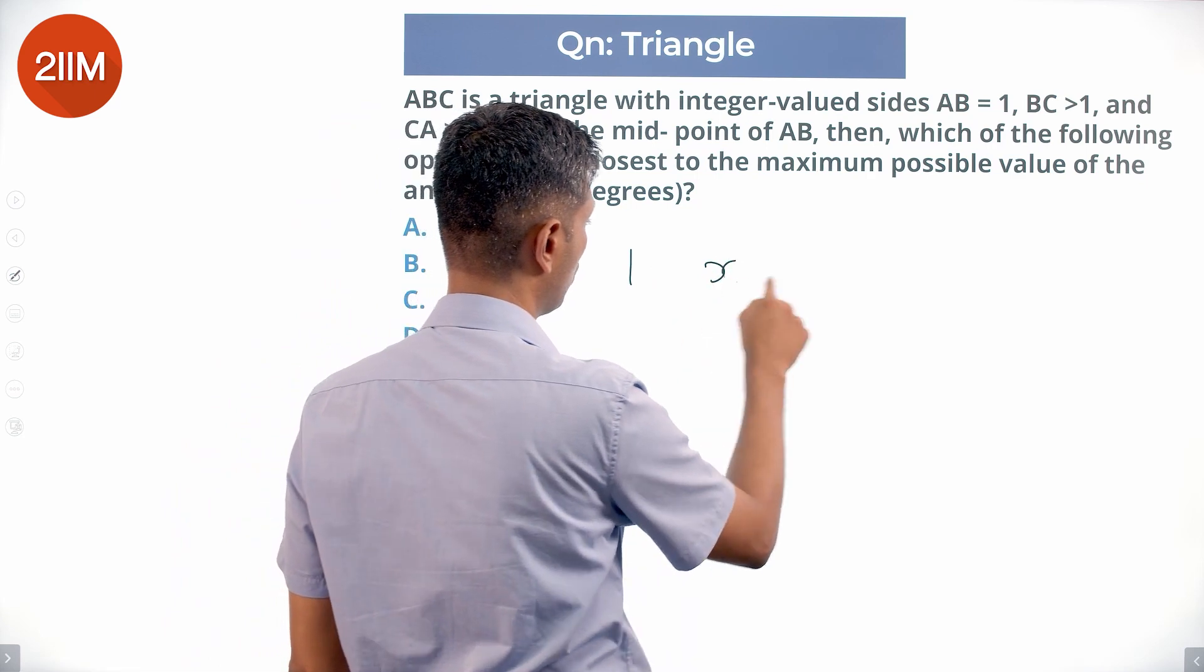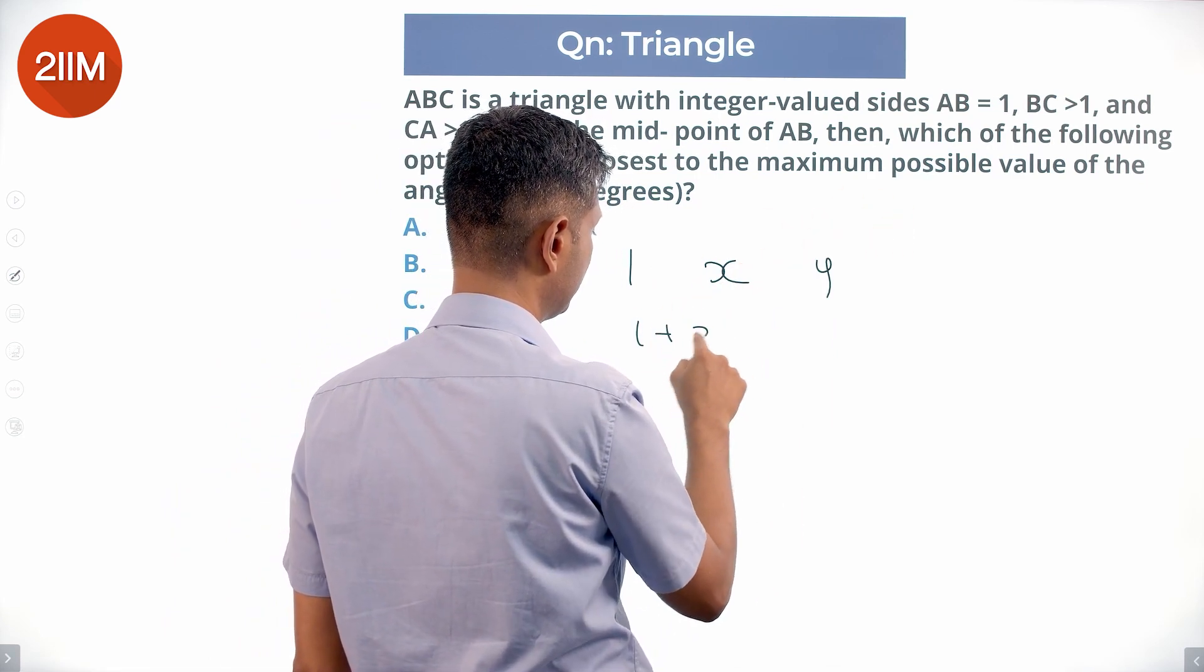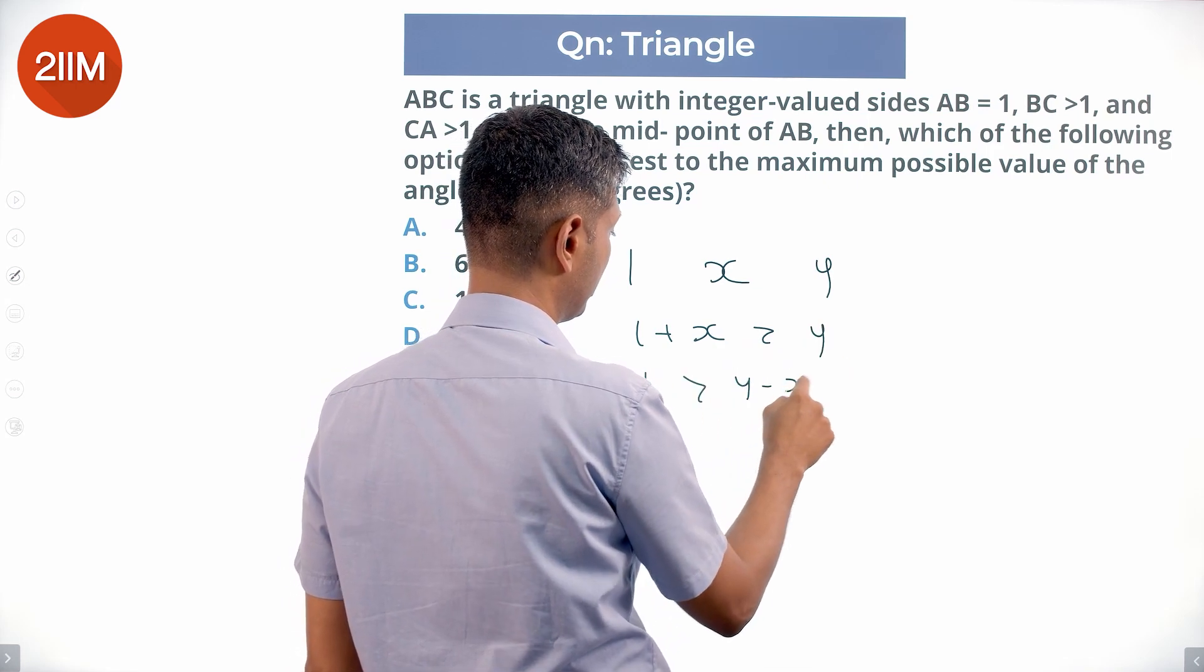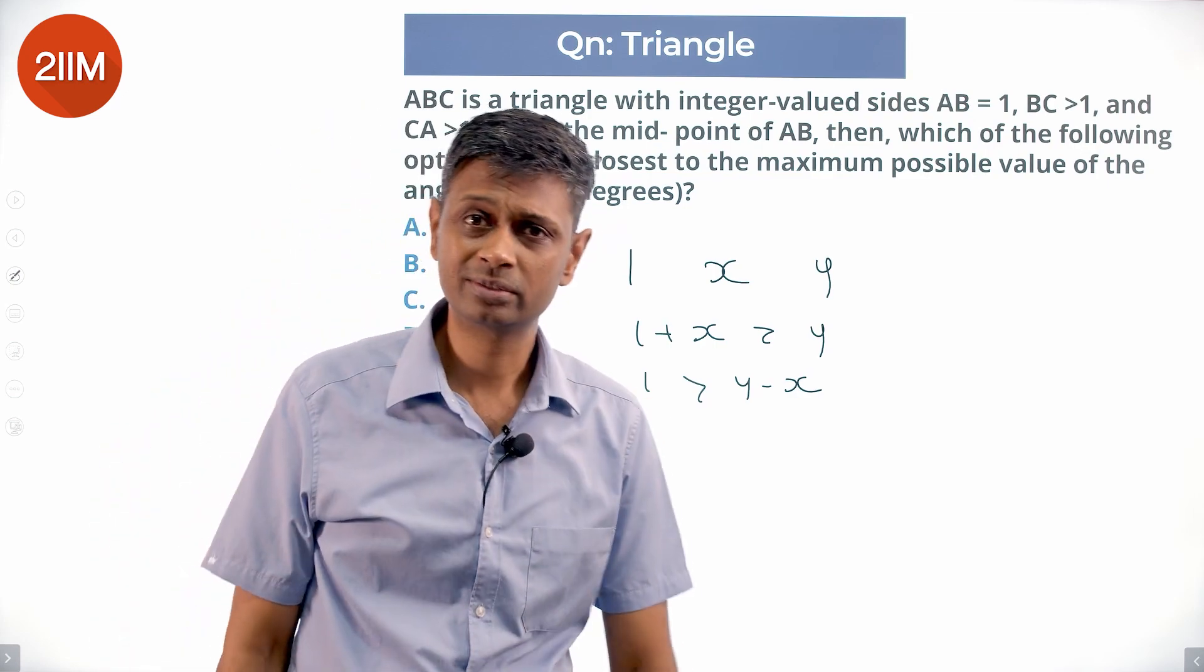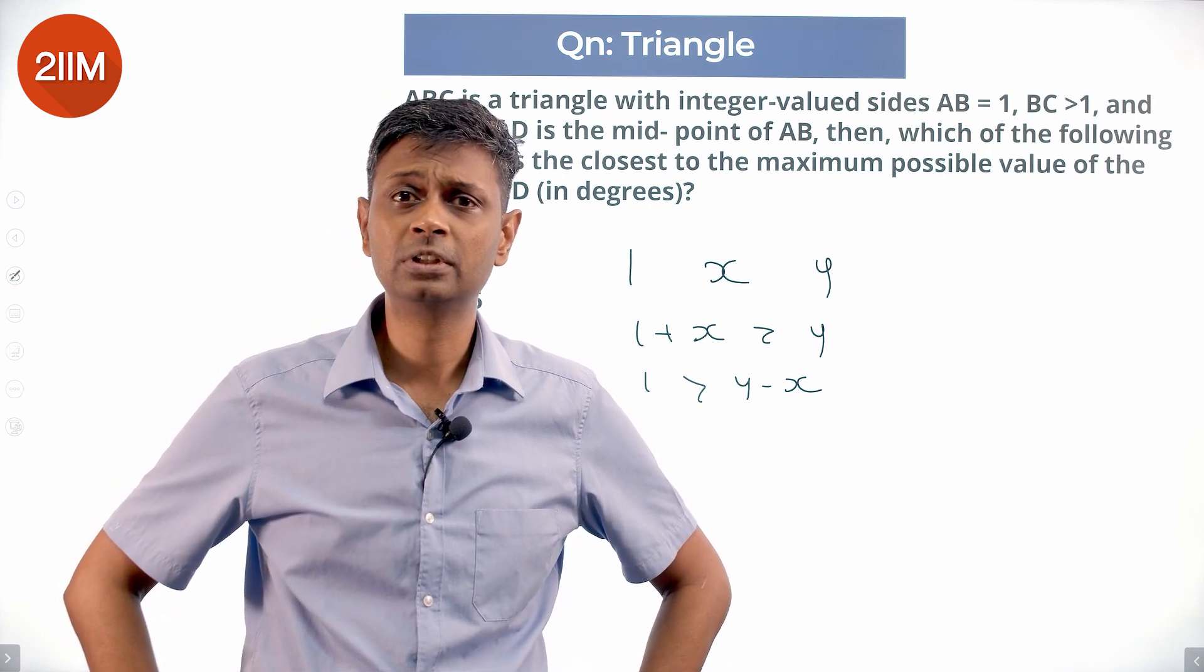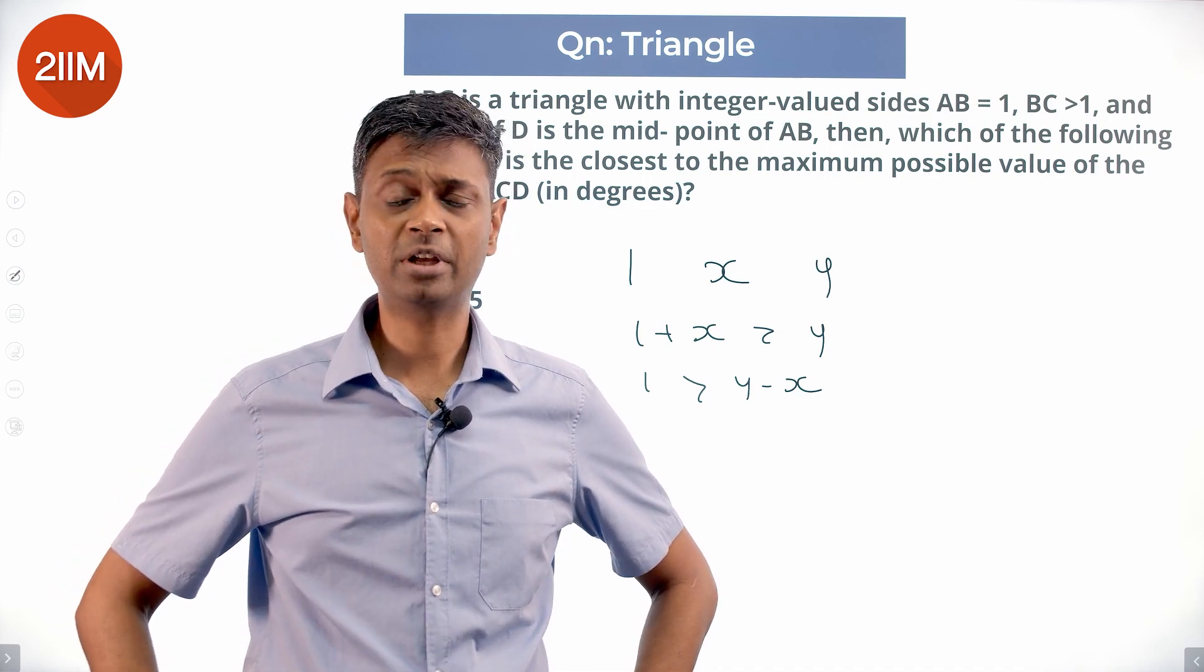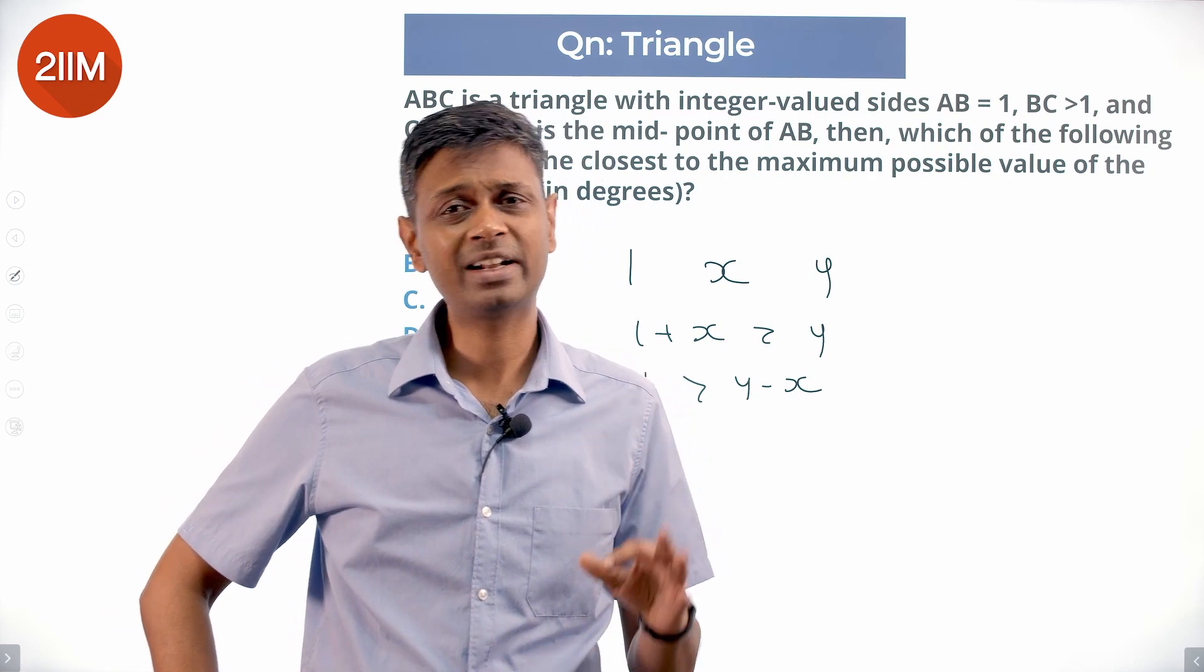If you say y is the longest side, we know 1 plus x is greater than y, or y minus x should be less than 1. Y and x are integers. The difference between two integers should be less than 1 - how is that even possible? The difference between two integers, how can it be less than 1?